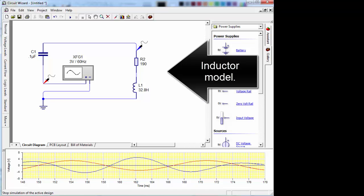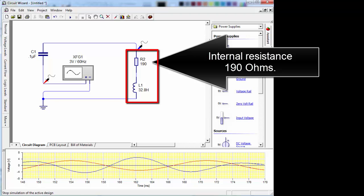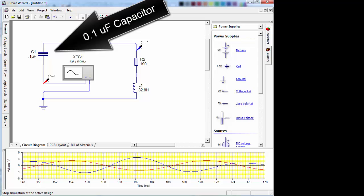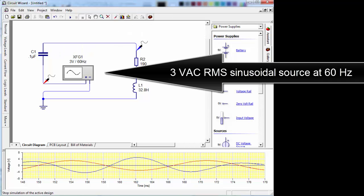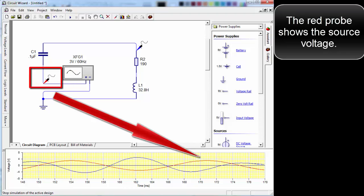Three simulations are shown before seeing the measured results. That's a model of the inductor. The inductor resistance is 190 ohms. There's a 0.1 microfarad capacitor in series, 3 volts AC RMS sinusoidal source at 60 hertz. The red probe shows the source voltage.